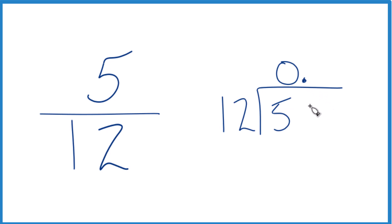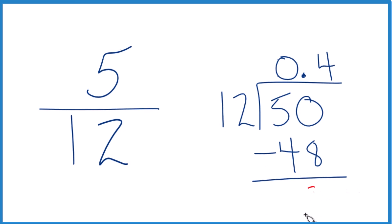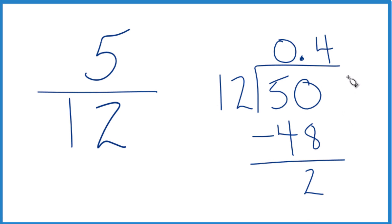4 times 12, that would be 48, so that goes in there nicely. And 50 minus 48, that's 2. 12 doesn't go into 2, let's move over 1 and call this 20.